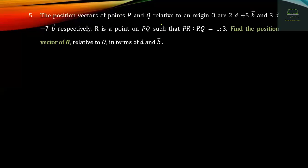U relative to an origin O. O is the origin of the meaning of P and U position. This means O, B, O, U and U. O, B: 2A plus 5B. O, U: 3A minus 7B.